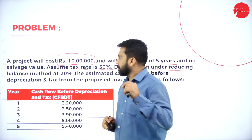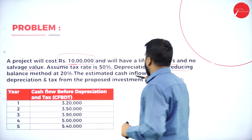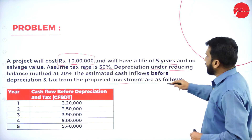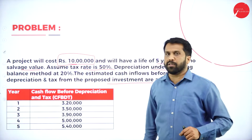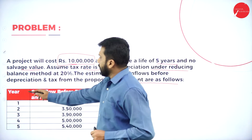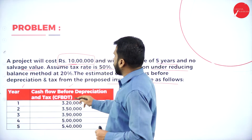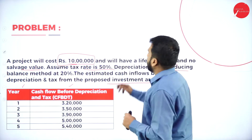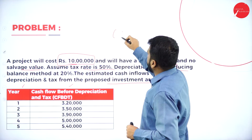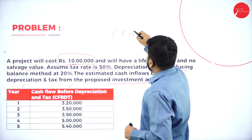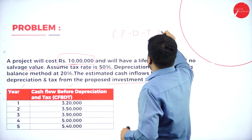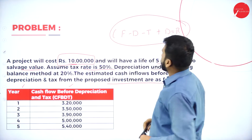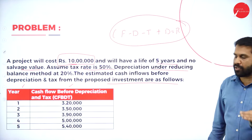The estimated cash inflow before depreciation and tax from the proposed investment are as follows. Your cash flow before depreciation and tax — the calculation goes: cash flow minus depreciation, minus taxation, then add back depreciation, and you will get your return. This is how we have to do the calculation.